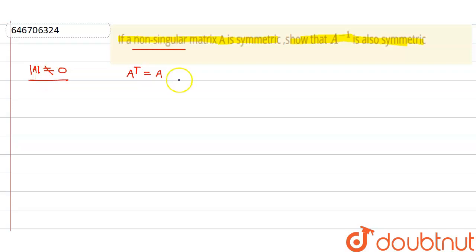Now see, we need to show that A inverse transpose is equal to A inverse. See carefully, we know the property which says that A inverse transpose is equal to A transpose inverse, because these things are equal to each other.